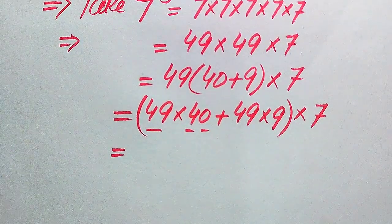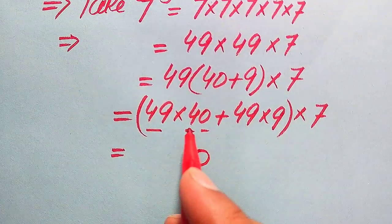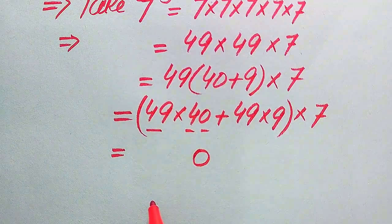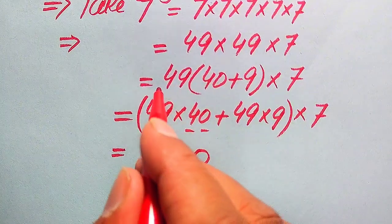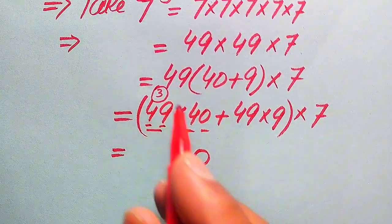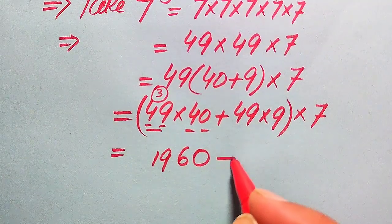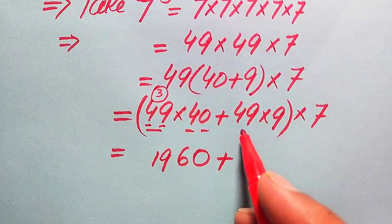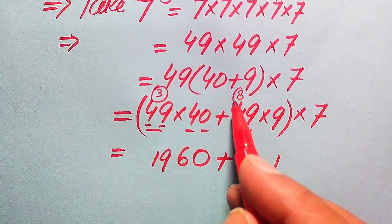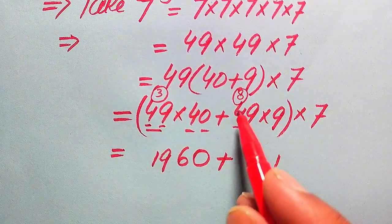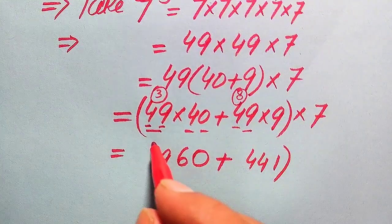For 49 times 40: this is a two-digit number, so first we multiply 0 with 49 to get 0, then 4 times 49 — 4 times 9 is 36, write 6 carry 3; 4 times 4 is 16, plus 3 is 19 — giving 1960. For 49 times 9: 9 times 9 is 81, write 1 carry 8; 9 times 4 is 36, plus 8 is 44, giving 441.